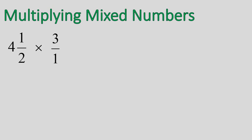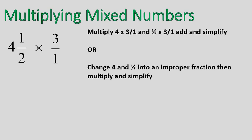The third thing we are going to talk about is multiplying mixed numbers. Now, this can get pretty tricky, so I want to explain it in broad terms. There are two ways that you can solve this. One is that you can multiply four times three over one, and then one half times three over one. Then you add together the results and simplify it. Or you can change four and a half into being an improper fraction and just multiply like normal and then simplify.